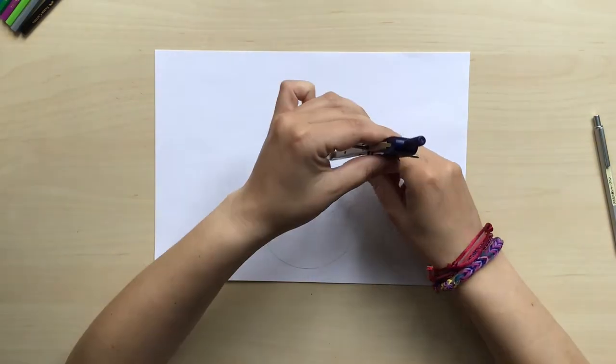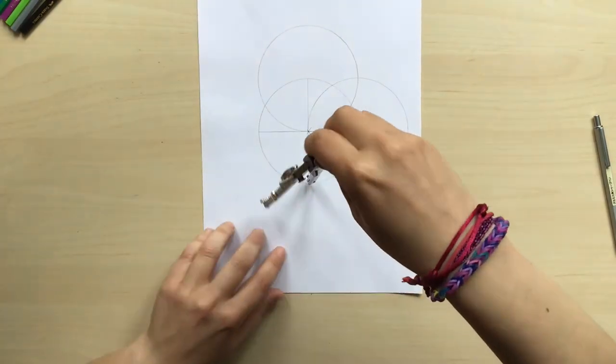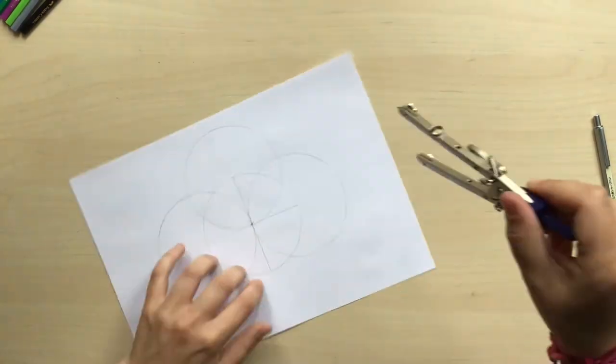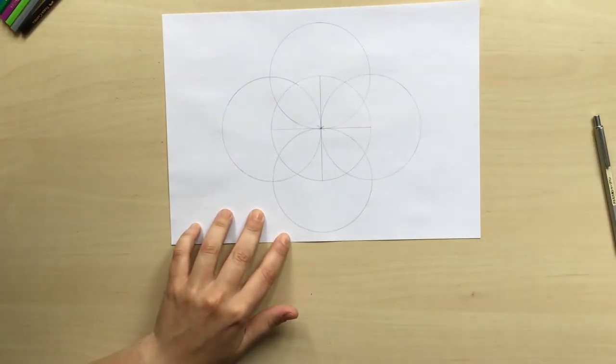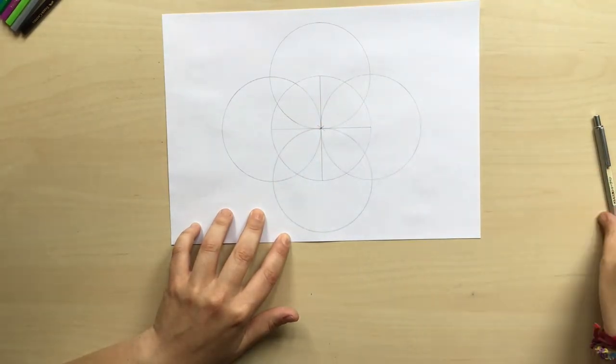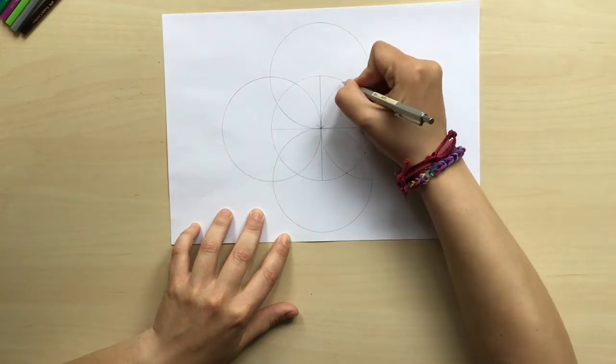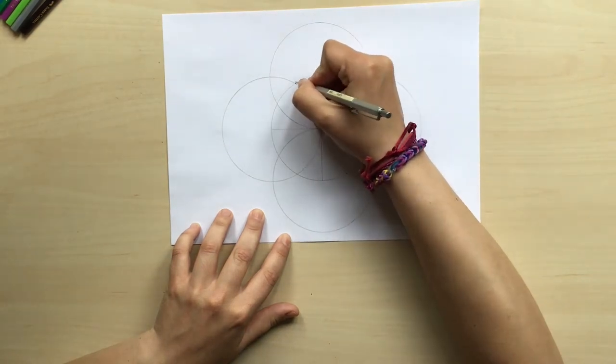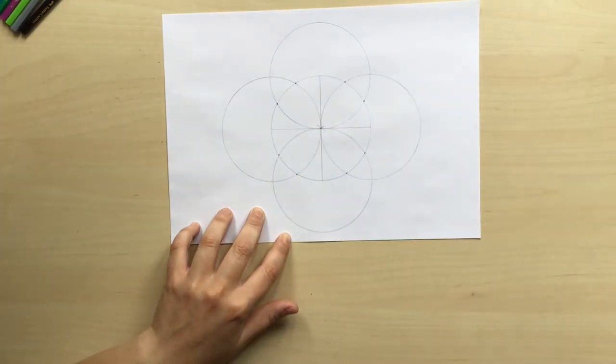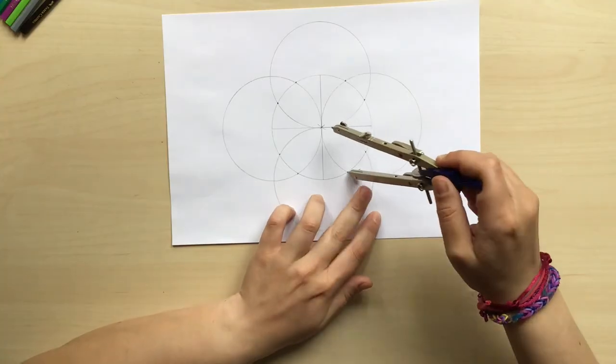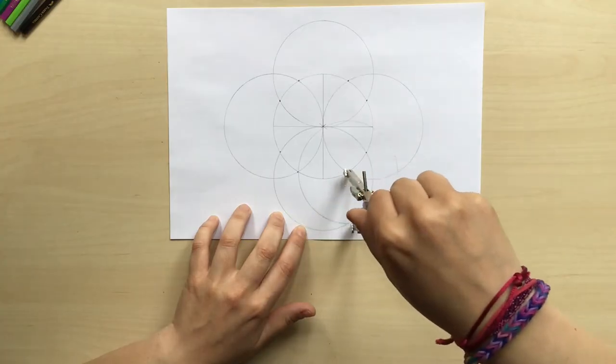As you can see, every time we're drawing a circle it's creating new points inside the main circle - one, two, three, four, five, six, seven, and eight. So what we're going to do is place the compass in those eight points and draw eight circles with the same radius.